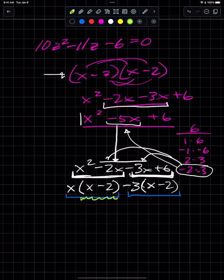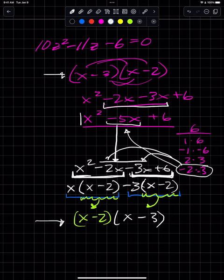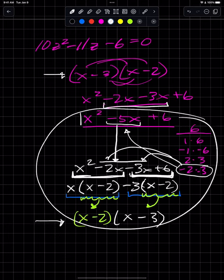I can factor x minus 2 away from the two terms and I'll have left x minus 3. So I get the same thing. This is the method that we'll use for factoring by grouping.